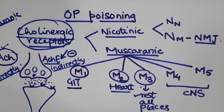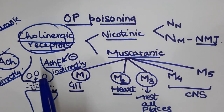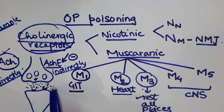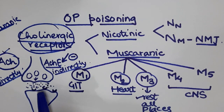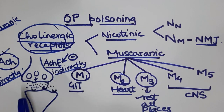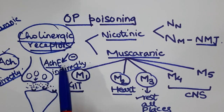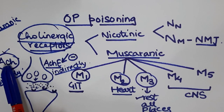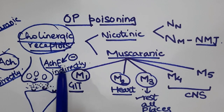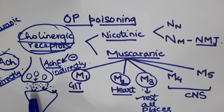Acetylcholine is a directly acting cholinergic. When released from the pre-synaptic neuron into the synapse, it acts on post-synaptic neuron receptors. Termination of this action takes place by hydrolysis of acetylcholine by acetylcholinesterase. Any drug which inhibits acetylcholinesterase will prevent the hydrolysis of acetylcholine and indirectly increase its action — these are indirectly acting cholinergic drugs.